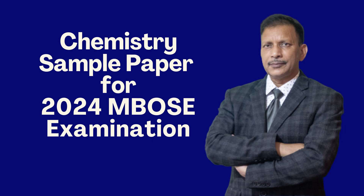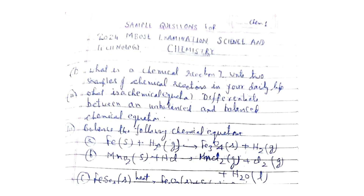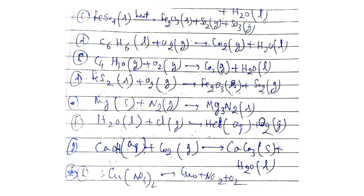What is a chemical reaction? Give two examples of chemical reactions in daily life. Next question: what is a chemical equation? Differentiate between an unbalanced and a balanced chemical equation, and balance the following chemical equation already projected on the screen.